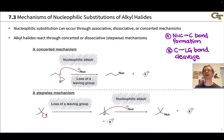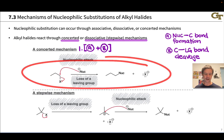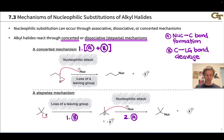Dissociative and concerted mechanisms are both observed. The concerted mechanism involves nucleophilic carbon bond formation and carbon-leaving group bond cleavage occurring in a single elementary step — so A and B occur in one elementary step, as we see with the curved arrows shown here. The dissociative or stepwise mechanism involves A and B happening in two separate steps, with carbon-leaving group bond cleavage occurring first, followed by nucleophile-carbon bond formation, and a carbocation intermediate appearing in this mechanism.